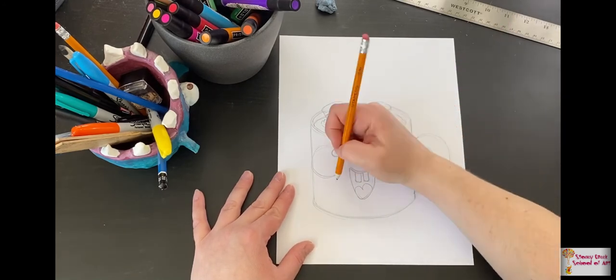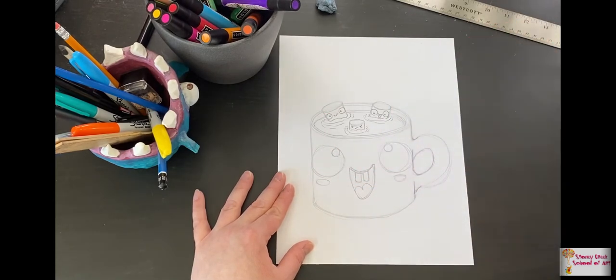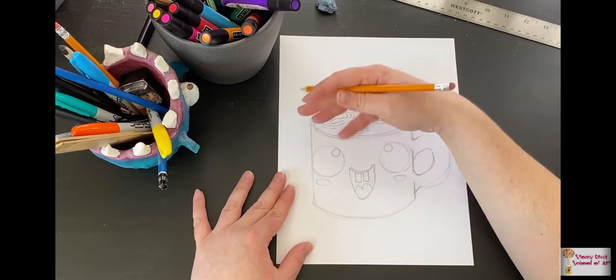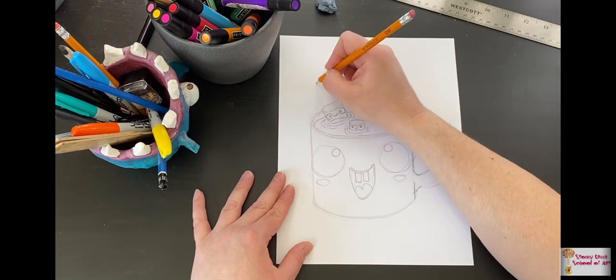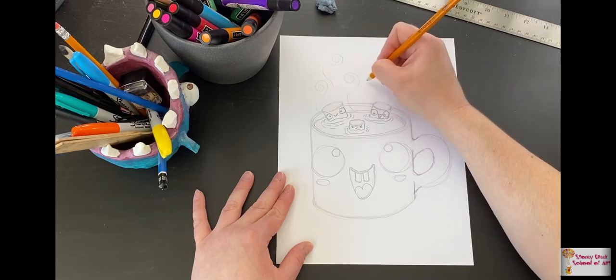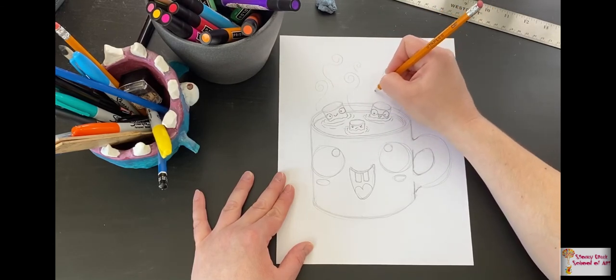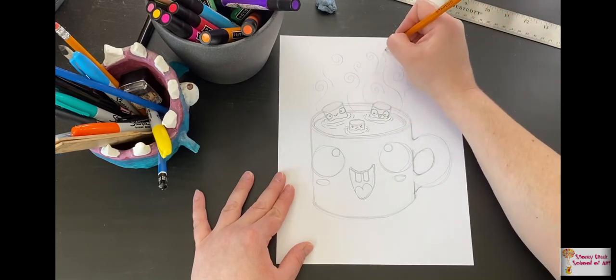Yeah. Okay. And some little cheeks. Perfect. So we can add some steam marks to show that our hot chocolate is really steamy. So I'm going to do some nice swirls like that. Oh my goodness. This looks awesome so far.